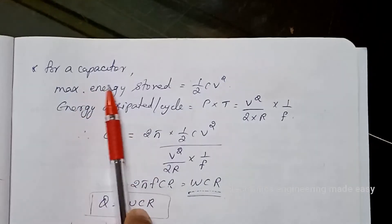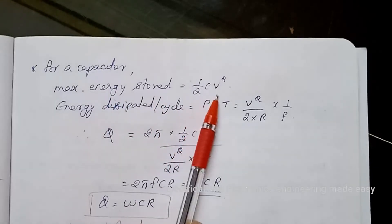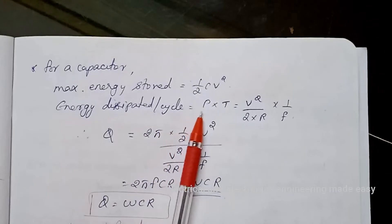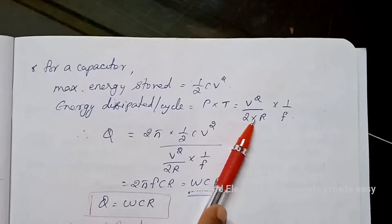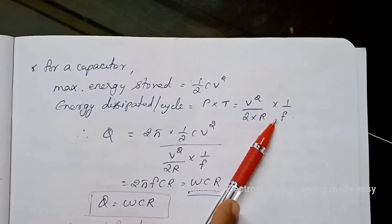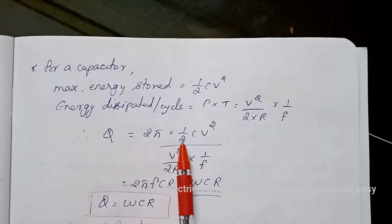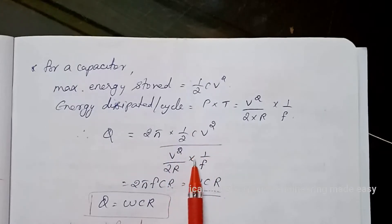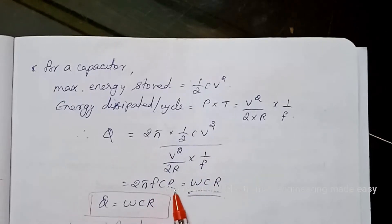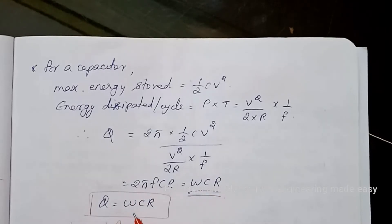For a capacitor, the maximum energy stored is half·C·V², and energy dissipated per cycle is power times time, that is V²/2 times R times 1/f. Therefore Q equals 2·pi times (half·C·V²) divided by (V²/2R times 1/f), which equals 2·pi·f·C·R, or omega·C·R. So the Q factor equals omega·C·R in the case of the capacitor.